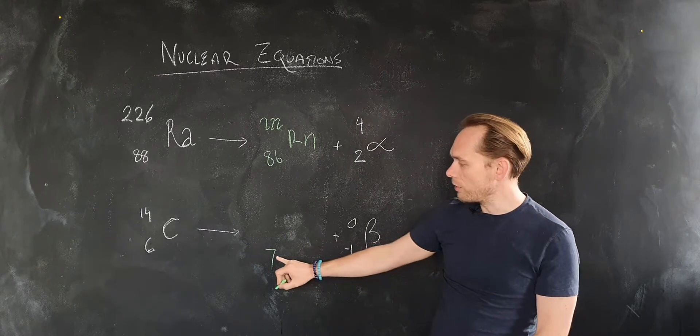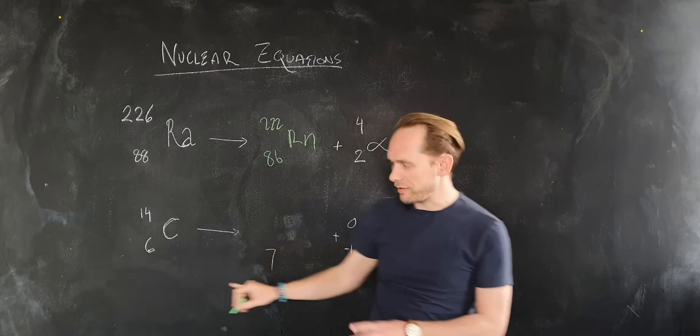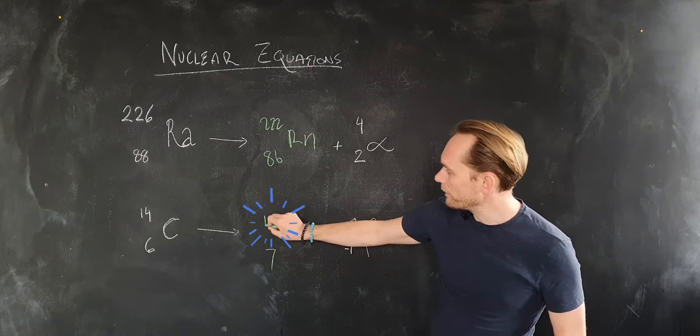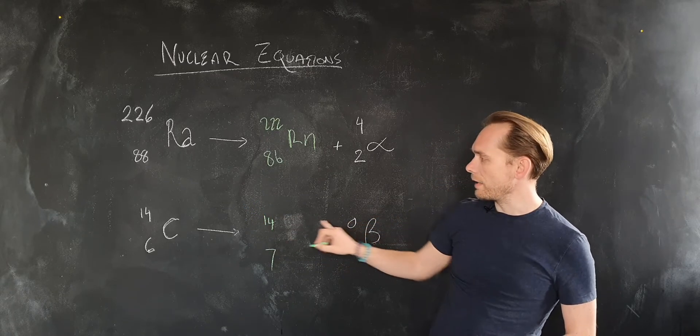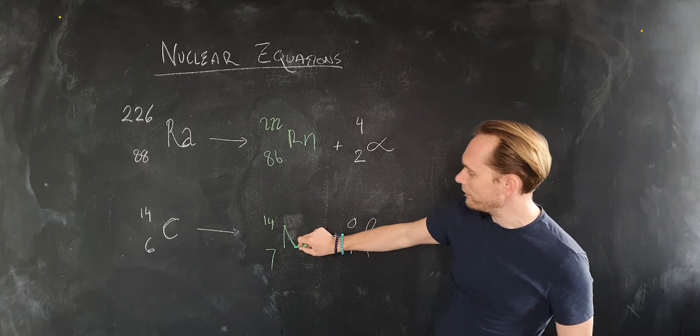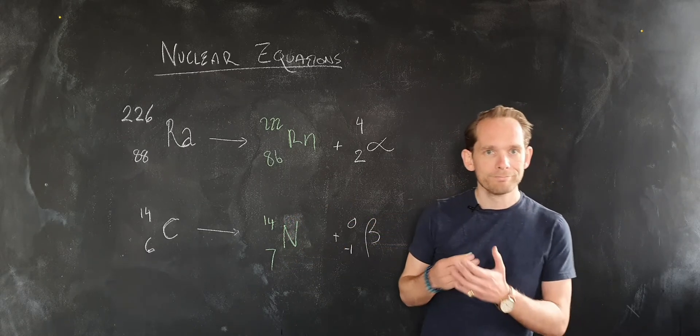These two now, 7 and minus 1, adds to make 6, just checking that's right. The 0 means no change here, 14 is going to remain 14. Again, they add up and they're equal, and look it up on the periodic table if you don't remember what number 7 is. It's nitrogen. Done.